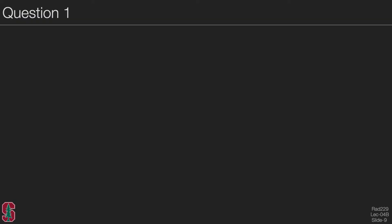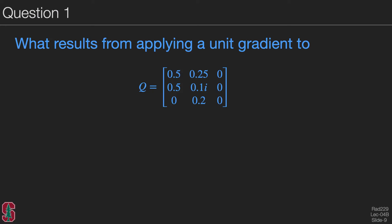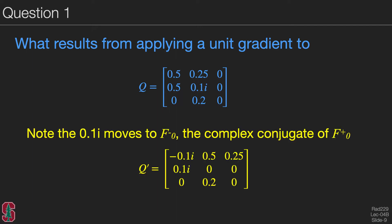So let's look at a question. What is the EPG coefficient state matrix that results from applying a unit gradient to the following matrix? So in this case, it's important to note that the F minus sub one state right in the middle of the matrix moves over to the left, but then the complex conjugate is taken to create the top left element, which is how we get the minus 0.1 times I in the top left. Otherwise, the components of the matrix on the top row are shifted to the right. And the Z states are unchanged.